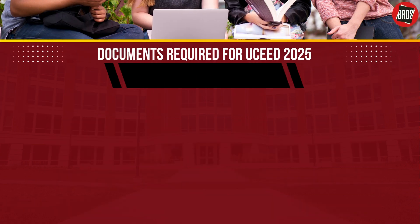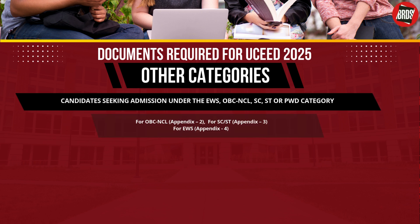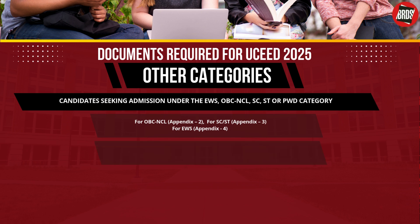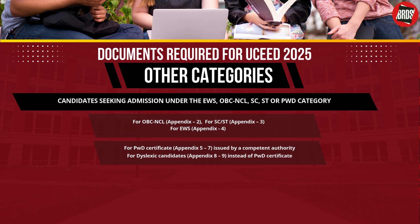Documents required for candidates seeking admission under the EWS, OBC-NCL, SC-ST or PWD category: for OBC-NCL refer to Appendix 2, for SC-ST refer to Appendix 3, for EWS refer to Appendix 4, for PWD certificate refer to forms in Appendix 5–7 issued by a competent authority. Only PDF formats with file extension PDF will be accepted.